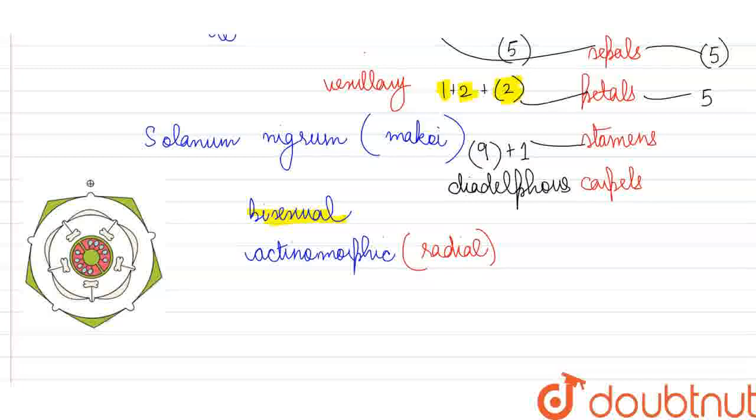Whereas in our Solanum flower, we will find five stamens which are attached to the petals. So epipetalous stamens are going to be there, and here petals were also fused together.